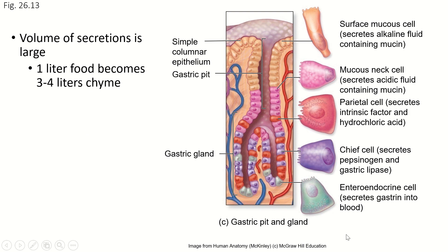The volume of all of these secretions is really, really big. If you eat a liter of food, that creates three to four liters of soupy mixture, which we call chyme — a term you need to know. Your stomach is going to secrete two to three liters of fluid that will travel through your gastrointestinal tract with the food as part of the chyme and be reabsorbed, most of it, by the digestive system.